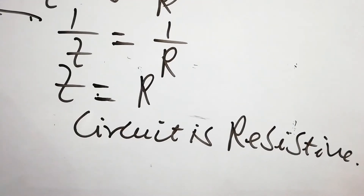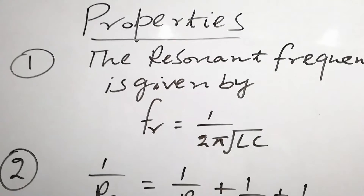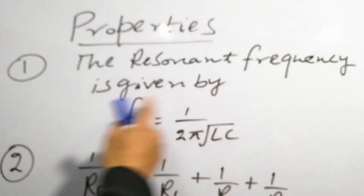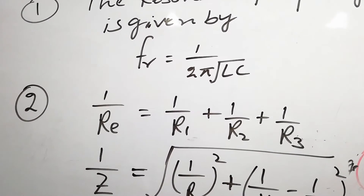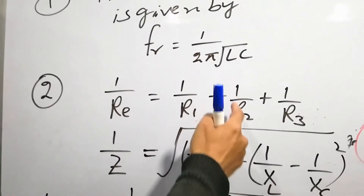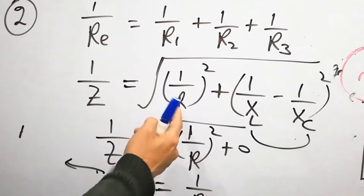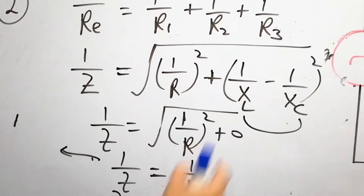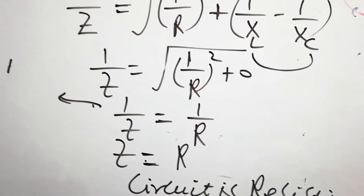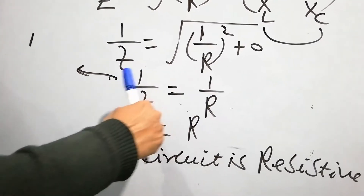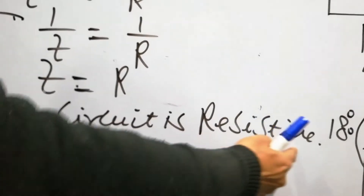At resonance, this parallel circuit is a resistive circuit. Property number two: the impedance is maximum. At resonance, the inductor and capacitor cancel out — the leading and lagging currents cancel each other. Only the resistor remains, and the LC branch draws no current from the source. This is why the impedance value is maximum.